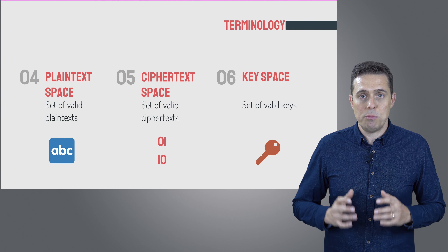Encryption typically involves three functions. The first one is called the key generation function. It accepts a string or parameter representing the desired length of the key and outputs the key itself. This is a randomized function, meaning there's some kind of random process happening inside. So if you run it again and again with the same input, every time you would expect it to give you a different output.